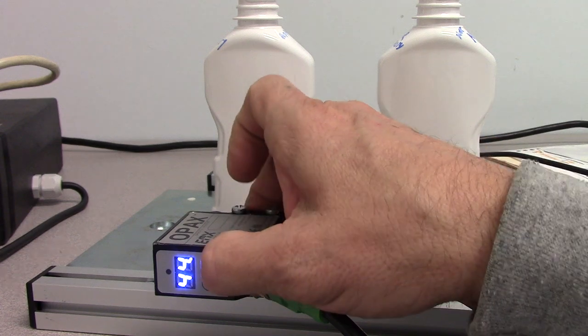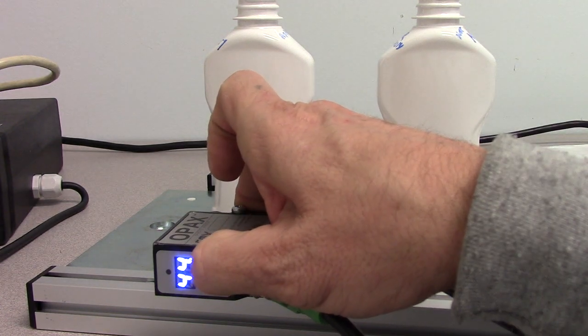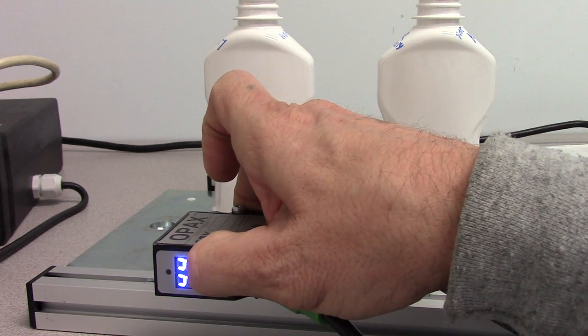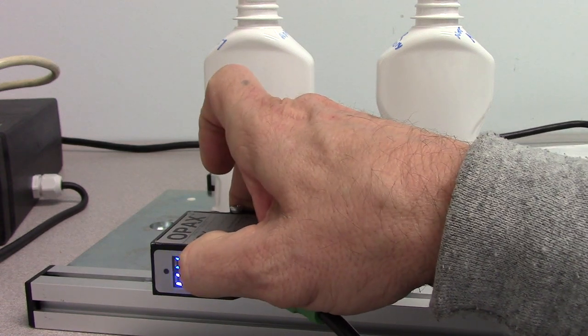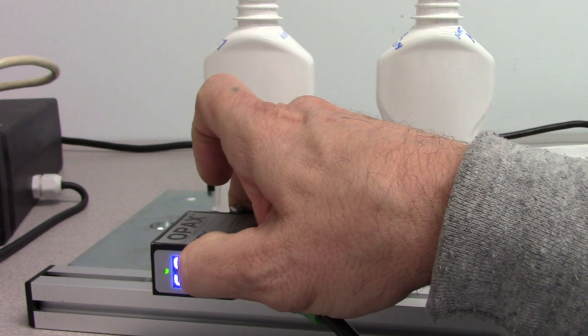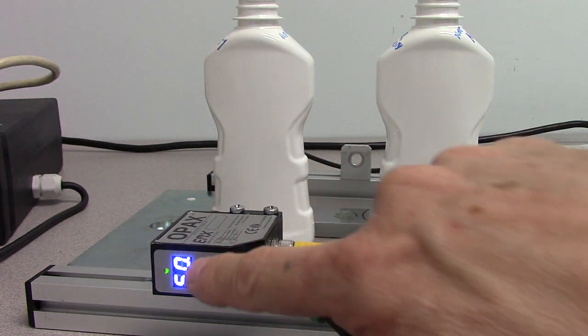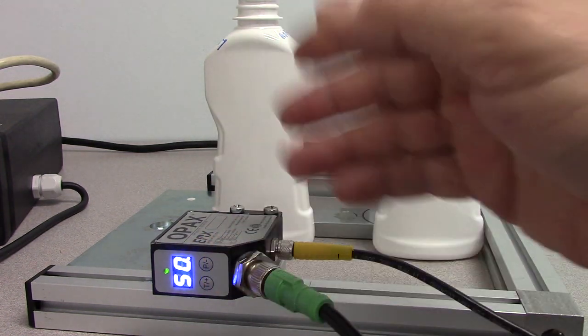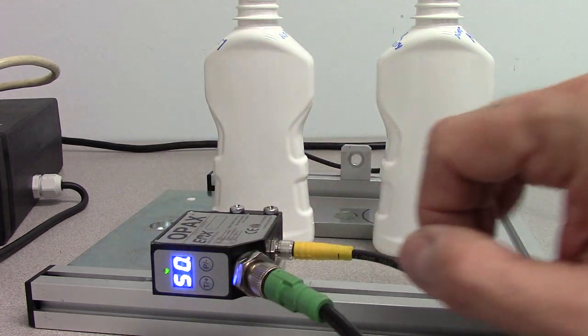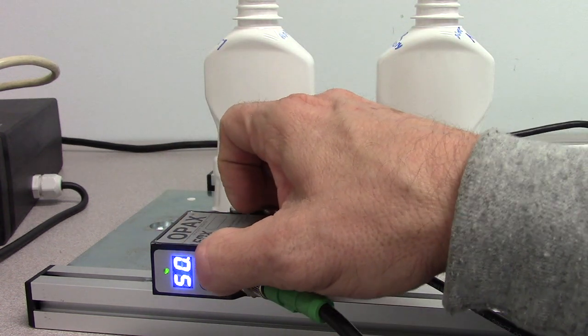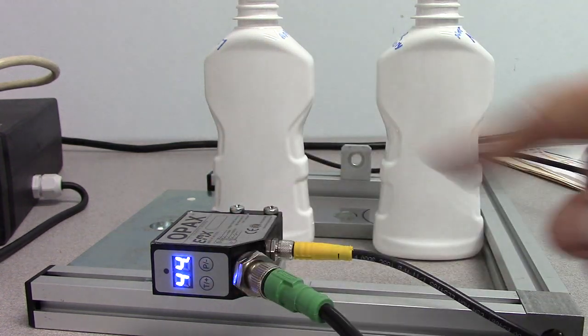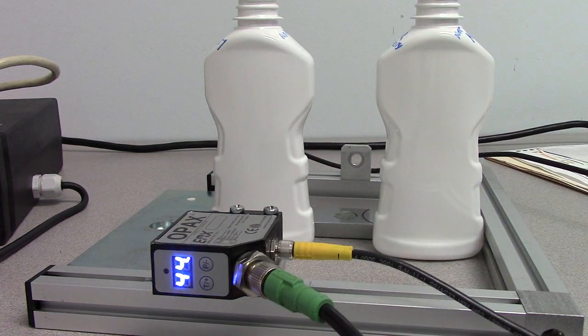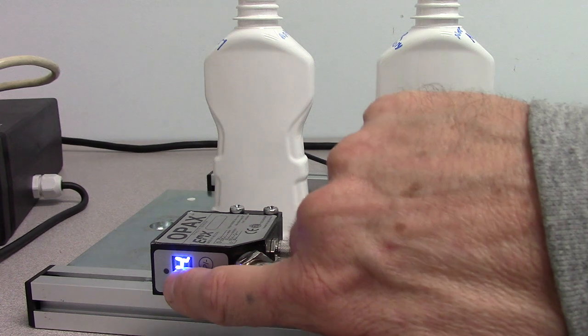We'll go into the setup menu, which indicates a value of 50 that can be incremented or decremented to set the threshold anywhere within the range of 0 through 99. We're going to exit the setup menu. Right now we're below the threshold value of 50 and the discrete output is off.